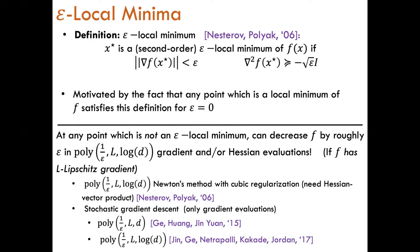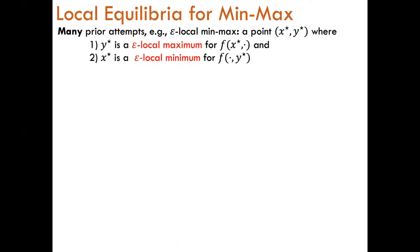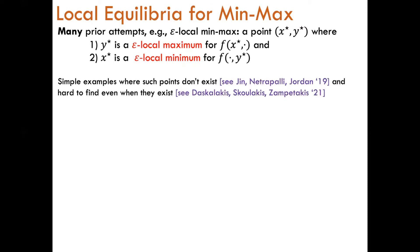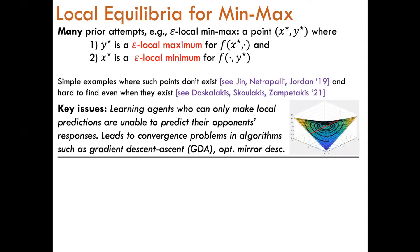The main question we want to answer is whether there is a similar computationally tractable alternative to min-max optimization. There have been many prior attempts at defining a local equilibrium for the min-max problem, including the widely studied local min-max point. We say that x, y is an epsilon local min-max point if y is an epsilon local maximum of f and x is an epsilon local minimum of f. However, there are many simple examples of functions where such local min-max points do not exist, and even in settings where such points do exist, finding a local min-max point is still known to be hard.